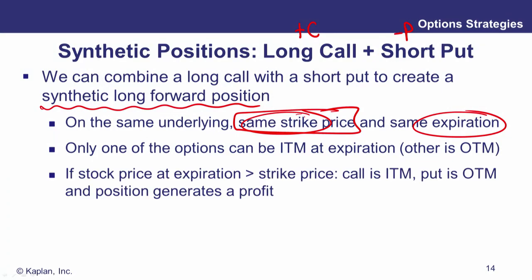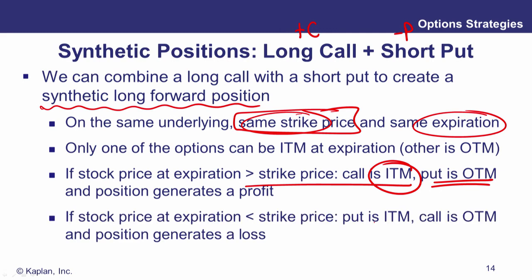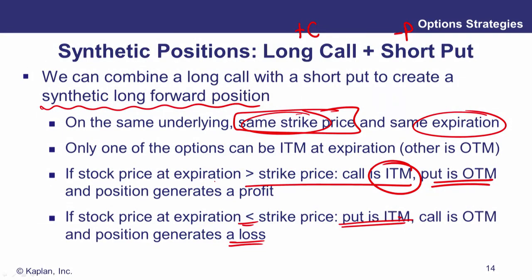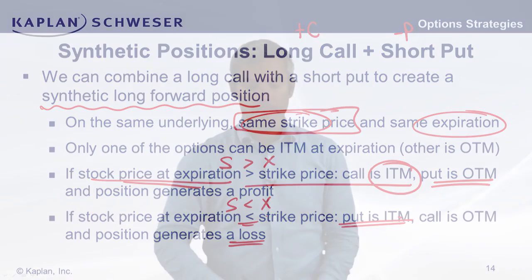Only one of the options can be in the money. If we're above the strike, the call is in the money — that's why we're winning — and the put is out of the money. If we're below the strike, the call is out of the money and the put is in the money. We sold the put, that's why we're losing. Really what we've generated, when we take these two positions and put them together with the same strike, is something that wins when the underlying goes up and loses as the underlying goes down. This is a synthetic long position.